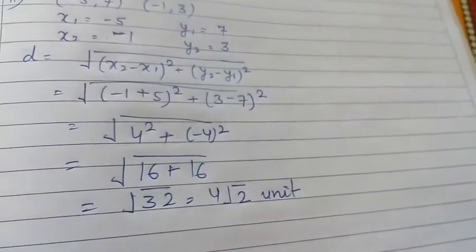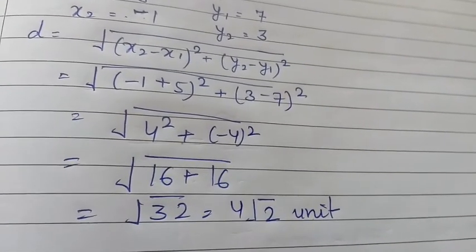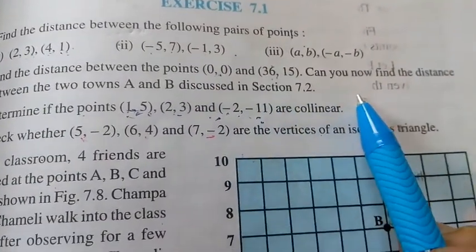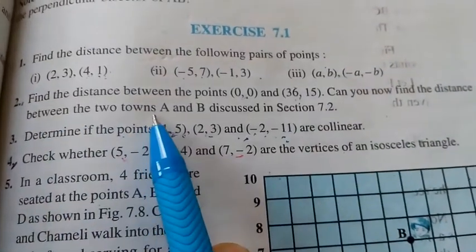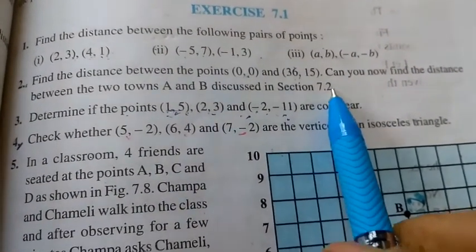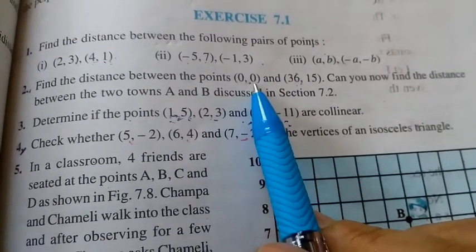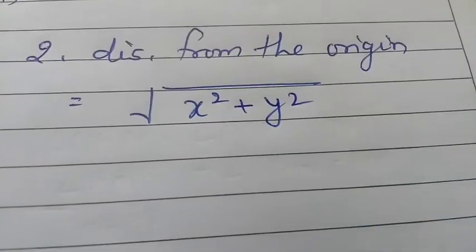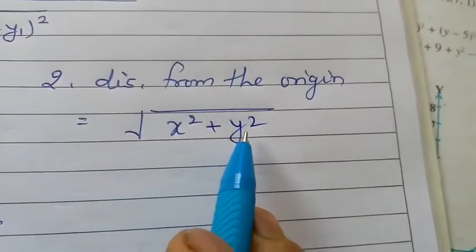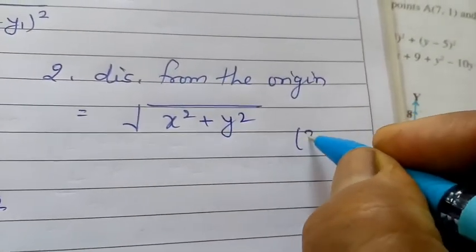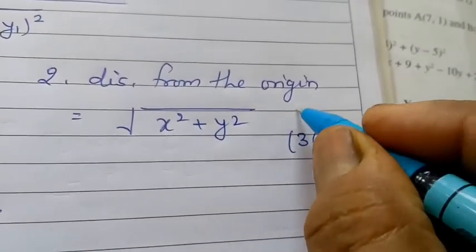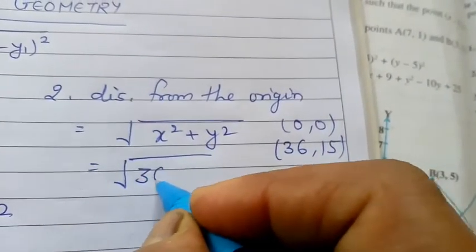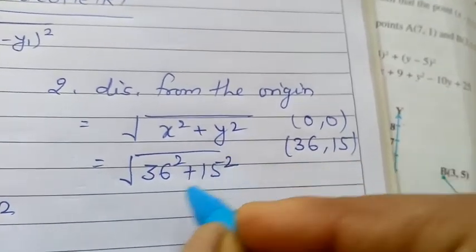The distance in coordinate geometry is in units. Question number 2: find the distance between the points (0, 0) and (36, 15). This asks us to find the distance between the two towns A and B discussed in section 7.2. The point (0, 0) is the origin, so the distance from the origin is under root of x squared plus y squared. With the point (36, 15), the answer will be under root of 36 squared plus 15 squared.